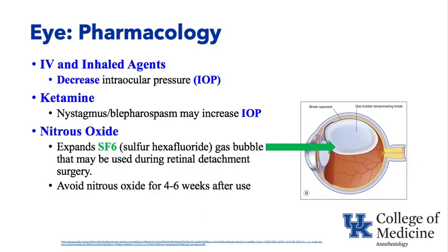Intravenous and inhaled agents, as previously discussed, in general decrease intraocular pressure, with the exception being ketamine, which causes nystagmus and blepharospasm. As that eyeball moves back and forth and blood flow to the eyeball goes up, the intraocular pressure can rise.